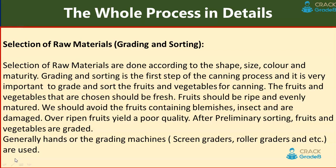Over-ripened fruits yield poor quality. After preliminary sorting, fruits and vegetables are graded. Cherries are graded as whole while mangoes are graded after cutting and slicing. Grading is done by hand or using grading machines such as screen graders, roller graders, etc.